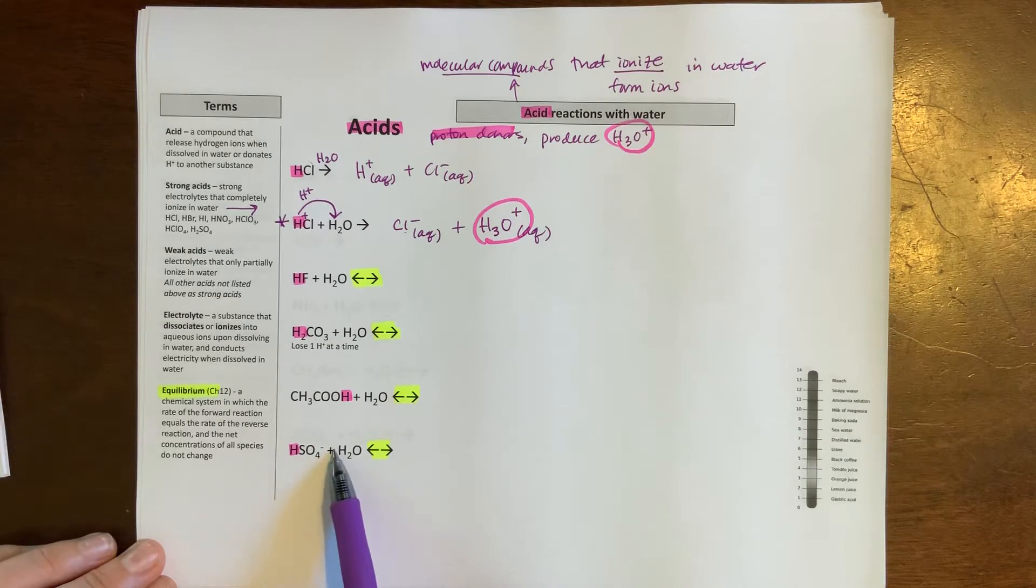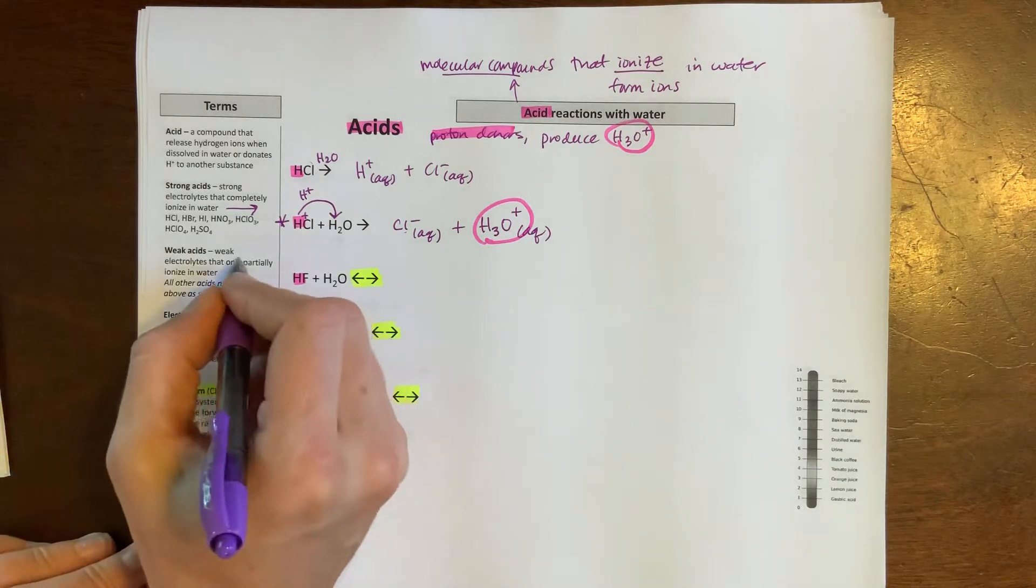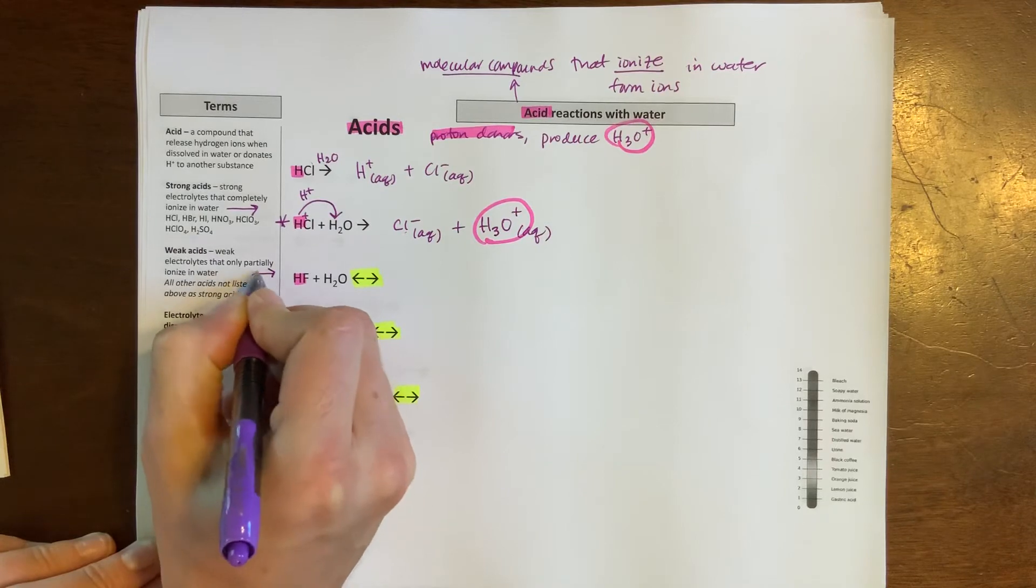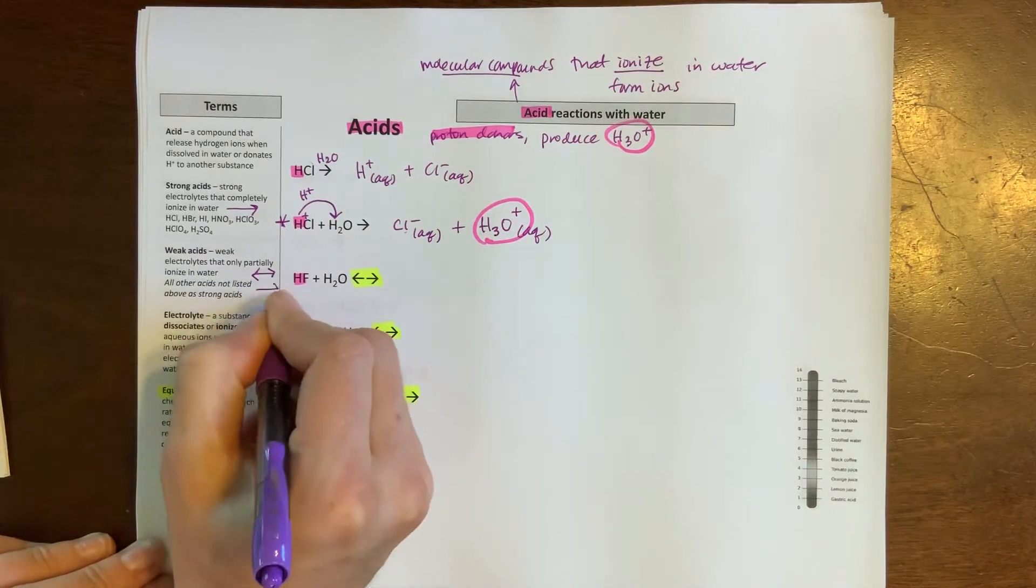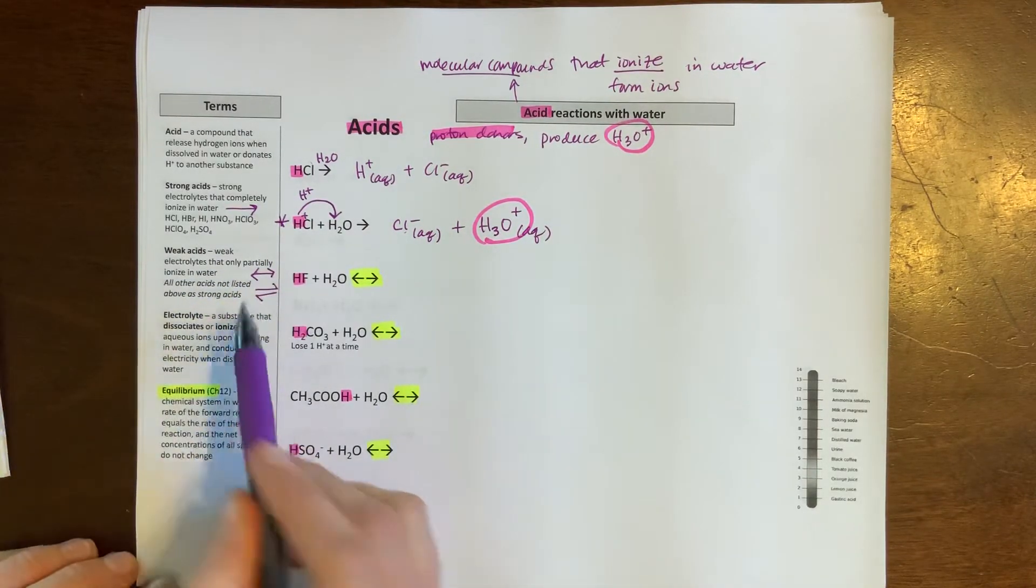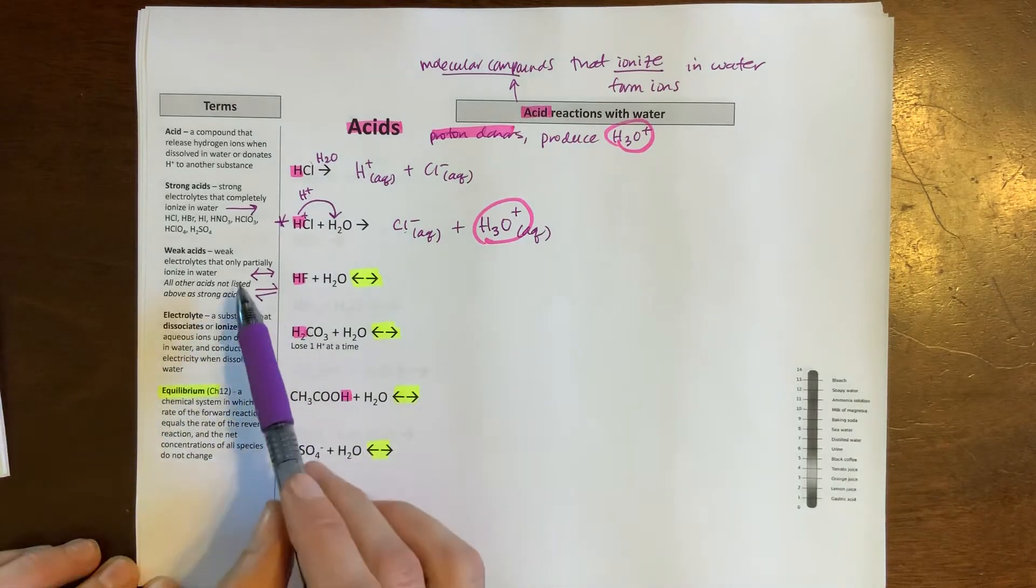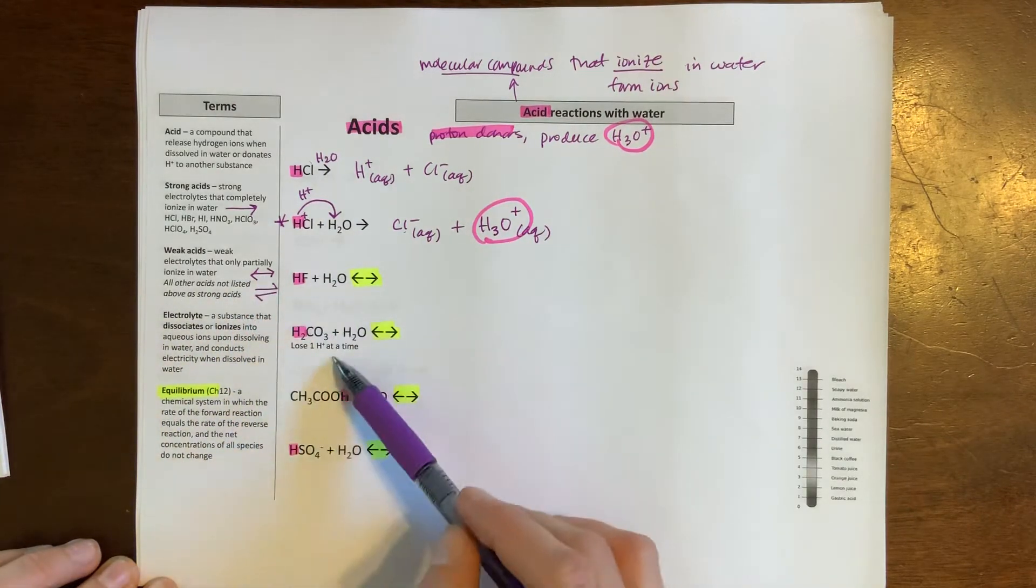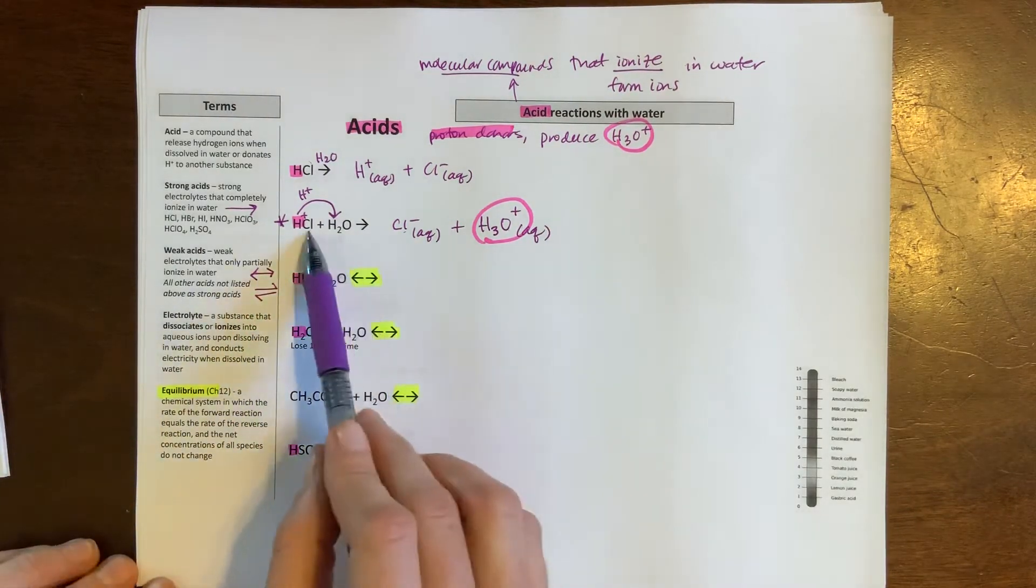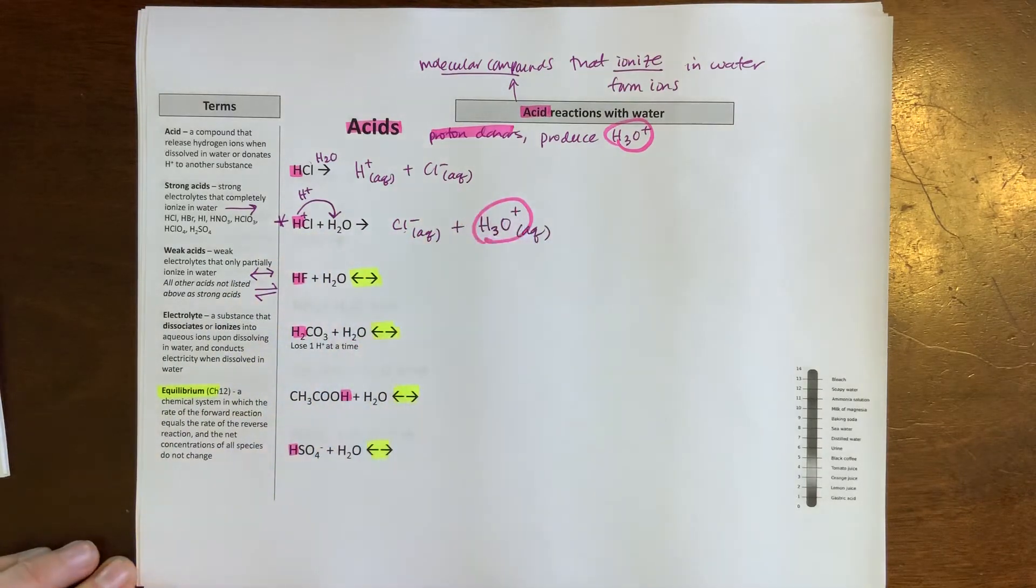In contrast, we see these equilibrium arrows which say, hey, we're going to make some products but keep some reactants. And that's going to be true for what we call weak acids, where we'll see forward and backward arrows, or sometimes you'll see them written as half arrows maybe in a textbook or another setting. And this is where you're going to have some reactants and some products, not entirely products like I see here with the strong one.